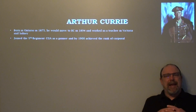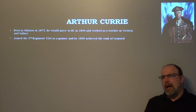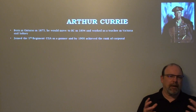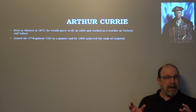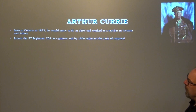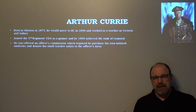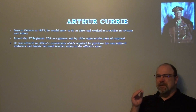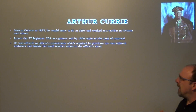When he arrived in Victoria at 19, he knew nobody and had no military background. Victoria at the time was one of the most English cities in Canada, with a strong class structure. Getting involved in the militia was an opportunity to connect socially and glimpse a different world. He joined the 5th Regiment Canadian Garrison Artillery as a gunner, and by 1900 achieved the rank of corporal. He was offered an officer's commission, which required purchasing his own tailored uniforms and donating part of his small teacher's salary to the officers' mess — a significant financial challenge.